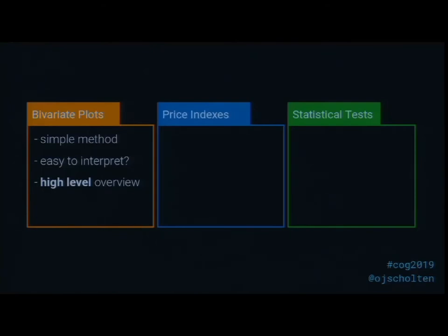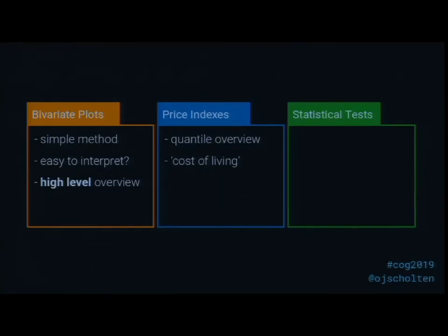Price indexes offer a quantile overview — a way of plotting the cost of living for a subset of items in a market, similar to the consumer price index tracking the cost of bread and milk over time. This serves as a proxy for content consumption rate: if the top-quartile item price index is rising, late-game content may be too difficult, causing players to drop out and making items scarcer and more expensive. Statistical tests quantify conceptions developed while analyzing the virtual economy.